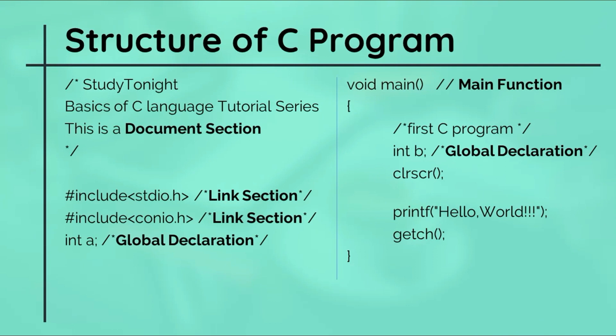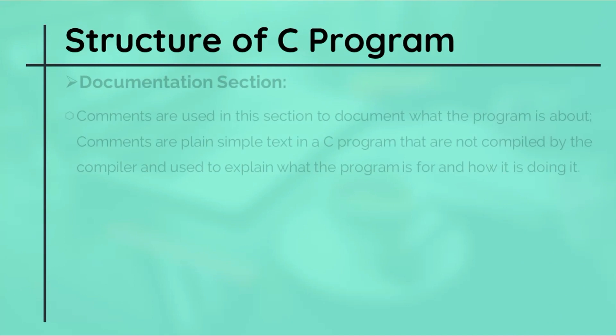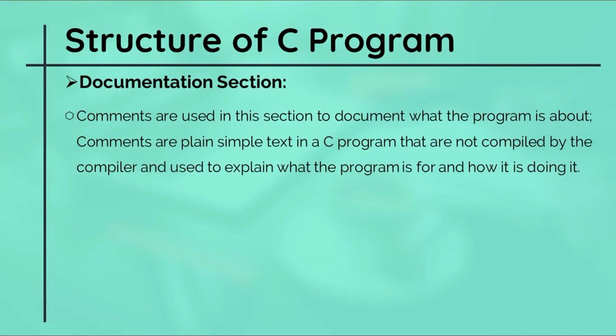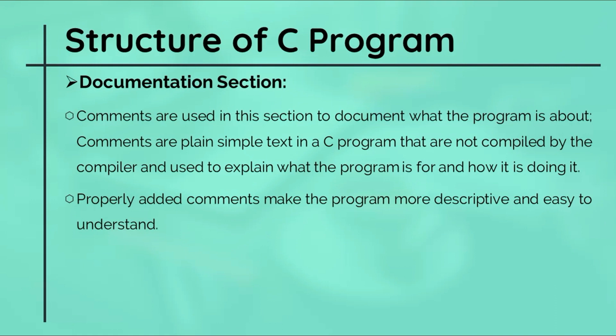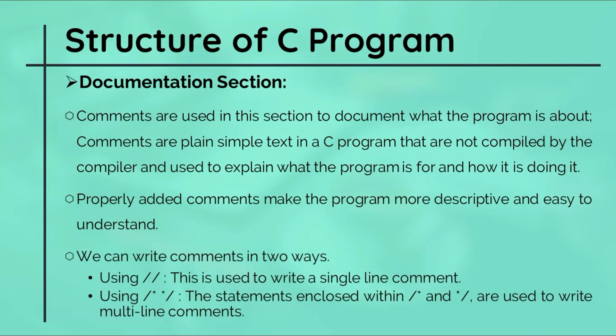We have added comments to the program describing each section for better understanding. Oh wait, you don't know what comments in programs are? Well, the documentation section is nothing but comments added to a program to explain the logic and steps of the program. It is not at all compulsory to add comments but highly recommended. Comments are explanatory text in C programs that are not compiled by the compiler and are used to explain what the program is for and how it is doing it. Properly added comments make the program more descriptive and easy to understand. We can write comments in two ways: the first one is double forward slash that is used to write a single line comment, and the second one is forward slash star star forward slash. The statement enclosed within this syntax is used to write multi-line comments.